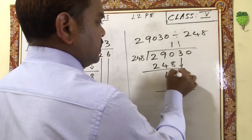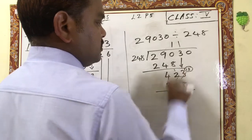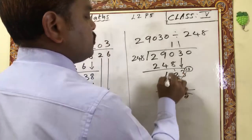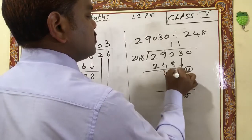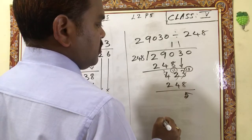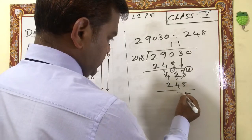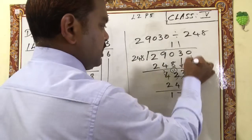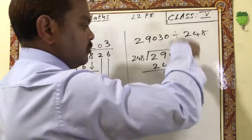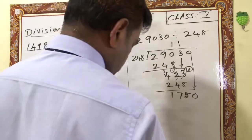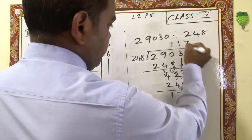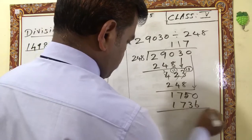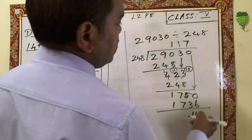Now 423: 1 × 248 is 248. Subtract: 3 minus 8, we can't — borrow from the left, so 13 minus 8 is 5. Then 1 minus 4, we can't — borrow, so 11 minus 4 is 7, and 3 minus 2 is 1. Result is 175. We can't divide 175, so bring this 0 down — now 1,750. Maybe 7: 7 × 248 is 1,736. Then subtracting gives remainder 14.